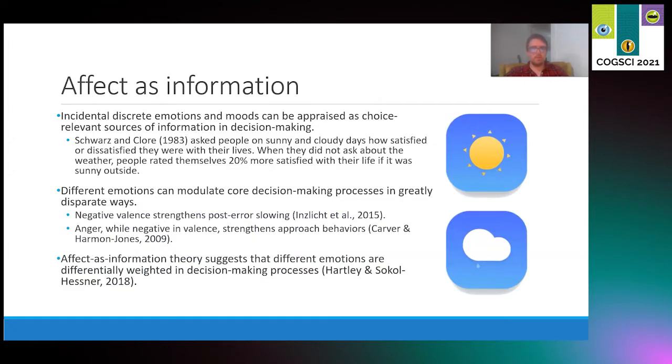Different emotions, moods, and affective states can have very important roles on decision making. Specifically, they can serve as vital sources of information for decision making processes. A good example of this is a study conducted by Schwartz and Clore, in which people were telephoned and asked how satisfied they were with their lives in general.